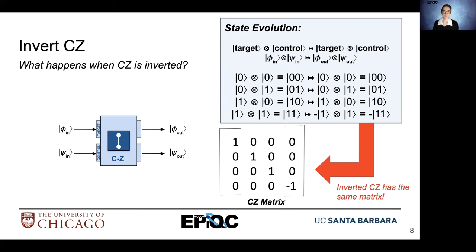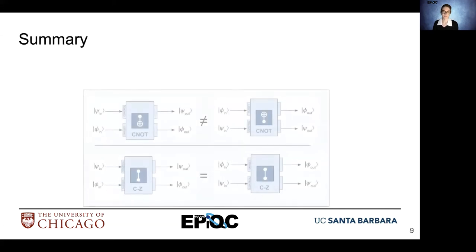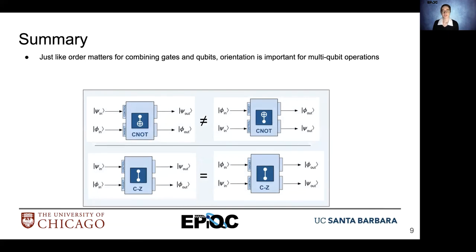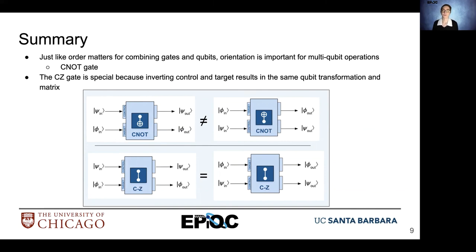The inverted control Z matrix is the same. To summarize, just like order matters for combining gates in a quantum circuit, orientation is very important for multi-qubit operations. The CNOT gate demonstrated that the regular implementation with control on top and target on bottom has a different matrix and different function from the implementation where the target is on top and the control is on bottom. The control phase gate, or control Z gate, however, was shown to be special in that flipping its orientation does not change the function associated with the transfer matrix.